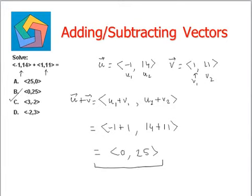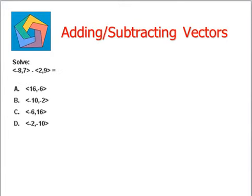Let's try the next question. Solve, u vector is given by negative 8 comma 7 while v vector is given by 2 comma 9. So this is our u1, u2, v1, v2.